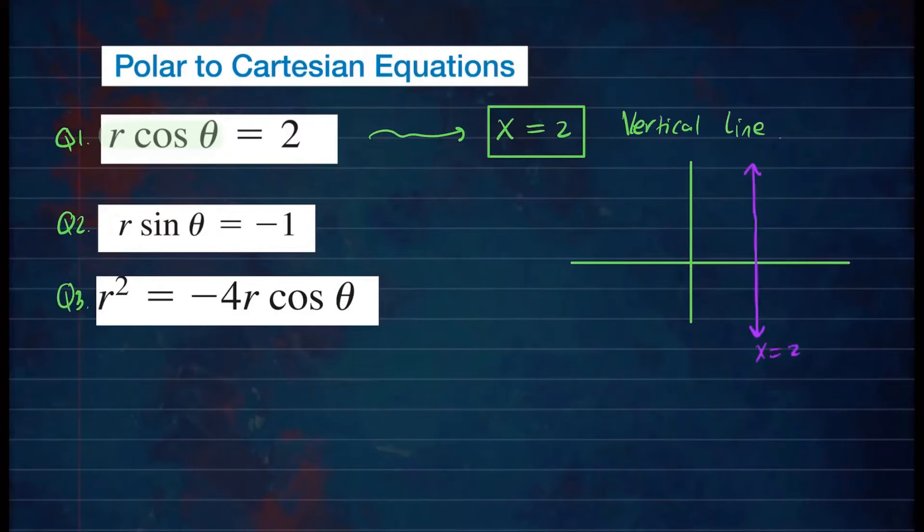For the second one, we're looking at r sine theta equals negative one. But we know r sine theta is y. So for number two, we can say that this is y equals negative one. In other words, this is just the horizontal line at negative one. So this is a horizontal line at negative one. Again, you can draw it if you like to, but finding the equation is important. Drawing, we all know at this point, so I'm going to leave that up to you.